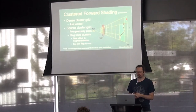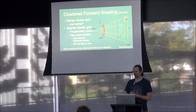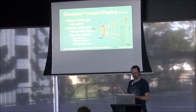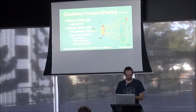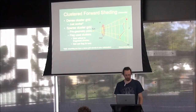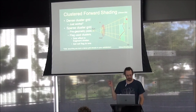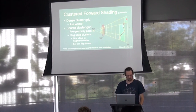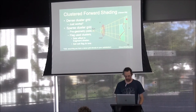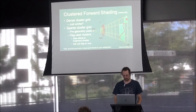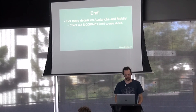For clustered forward shading, transparent geometry just works, assuming you're happy with the footnote caveats. You can make it work for the sparse cluster grid too if you do a pre-geometry pass to flag cells that contain geometry. You don't get any worse efficiency because you've already divided things up in the depth range. That was the first part.